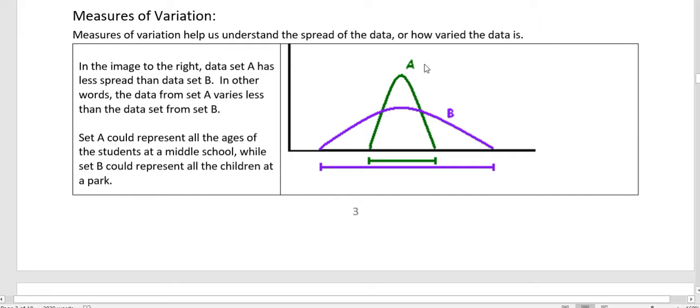If you look at the image here to the right, data set A has less spread than data set B. You can see that the green set of data here, all the values are pretty much bunched together. But when you look at B, those data values are much more spread, kind of lending that nice small mound.